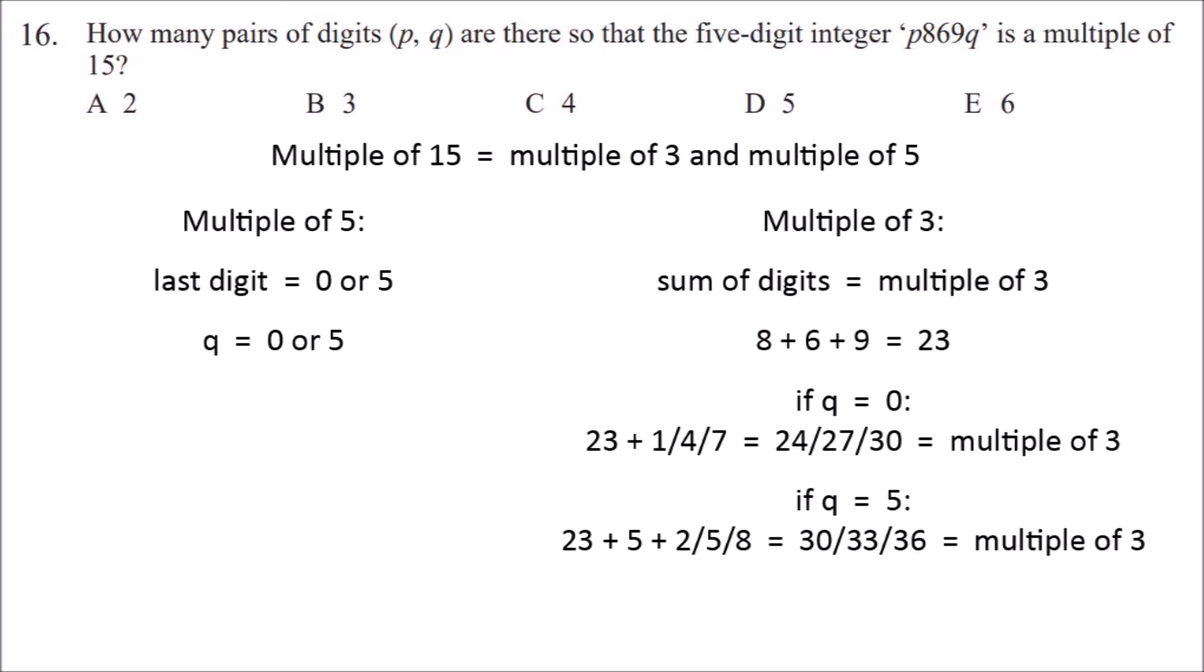So that means there are two possible values for q, and for each value of q there are three possible values of p. So the total number of pairs of digits p and q would be 3 times 2, which equals 6. So the answer is E, 6.